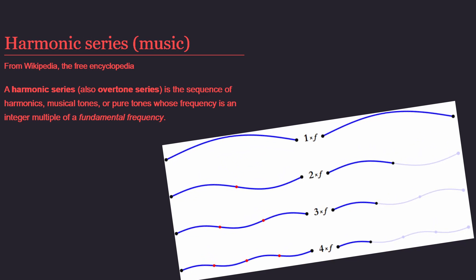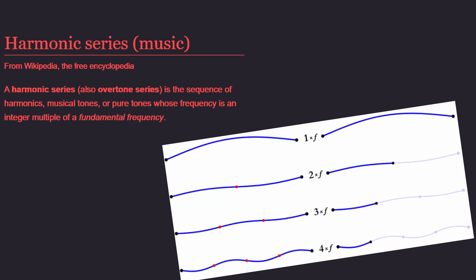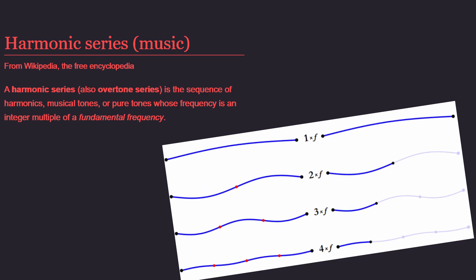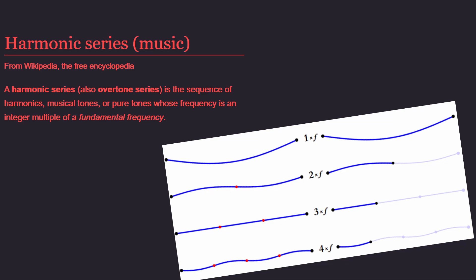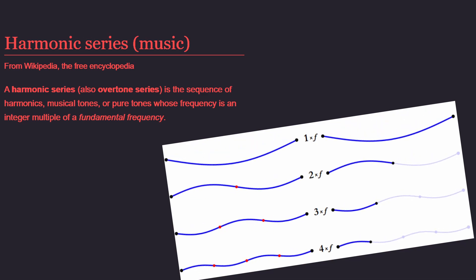When you hear the sound of the saxophone, you don't hear a single frequency, but you hear a mixture of different frequencies of the overtone series. But the saxophone and the clarinet have different overtones.